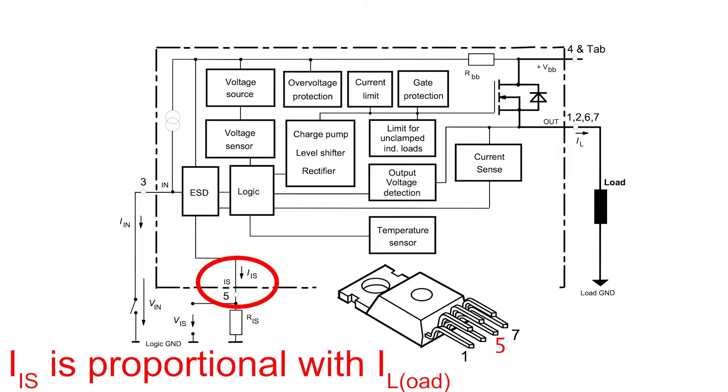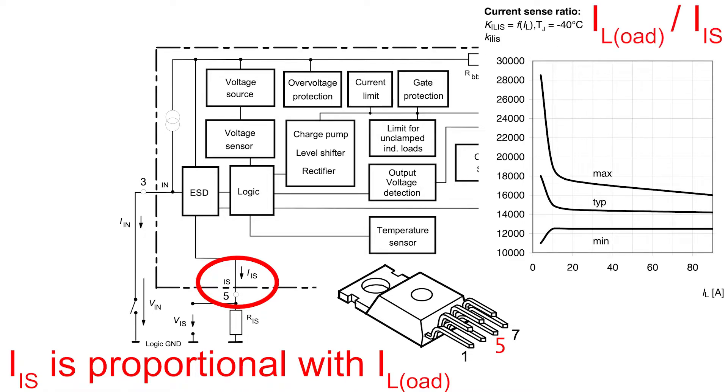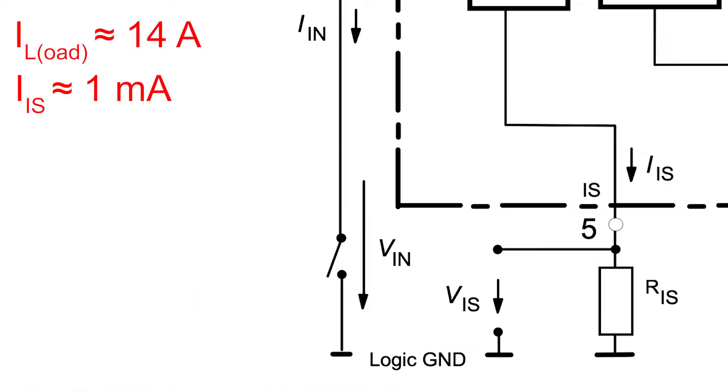Pin 5 is very useful as well, because a current proportional to the load current flows out of it. The ratio between the load current and the current from pin 5 is equal to 14,000. This means that a load current of 14 amps corresponds to a current from pin 5 of 1 milliamp.